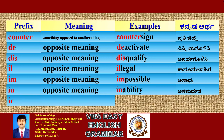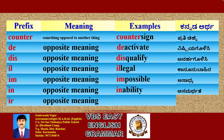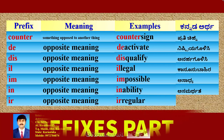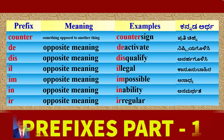Prefix 'Ir': its meaning is 'opposite'. Example: Irregular. Kannada meaning: Aniyamita — not regular or against the rules.